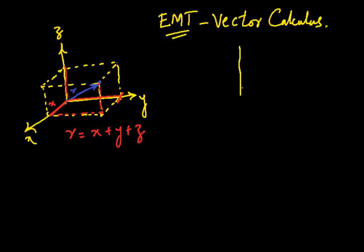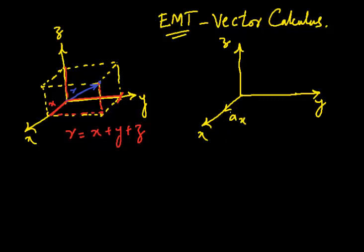Going a bit further and talking about unit vectors: if this is x, this is y, and this is z, then a unit vector with a magnitude of one in the x direction is a_x, a vector directed along the y axis with magnitude one is a_y, and the same applies to the z axis — it is a_z.